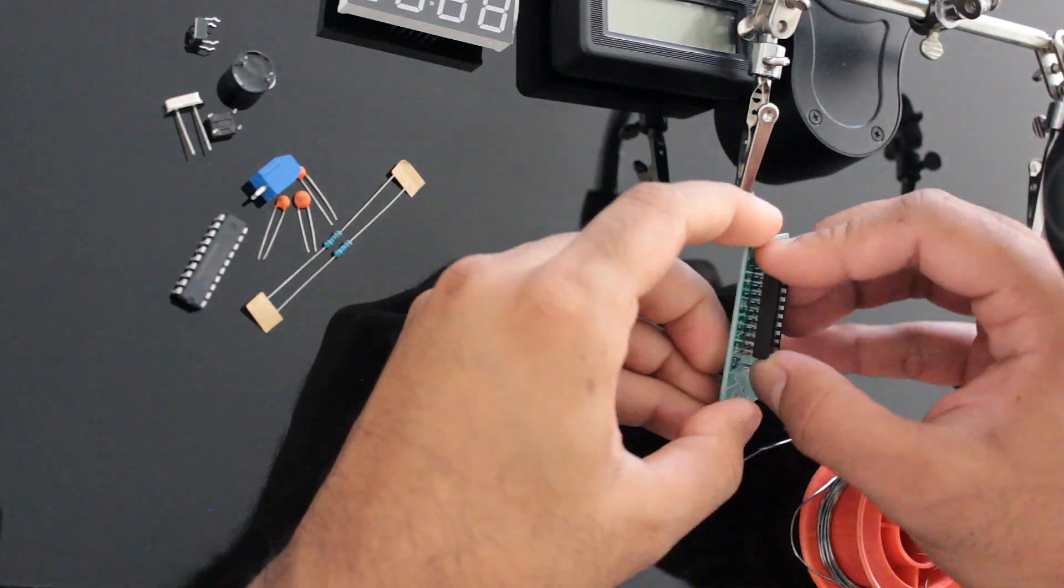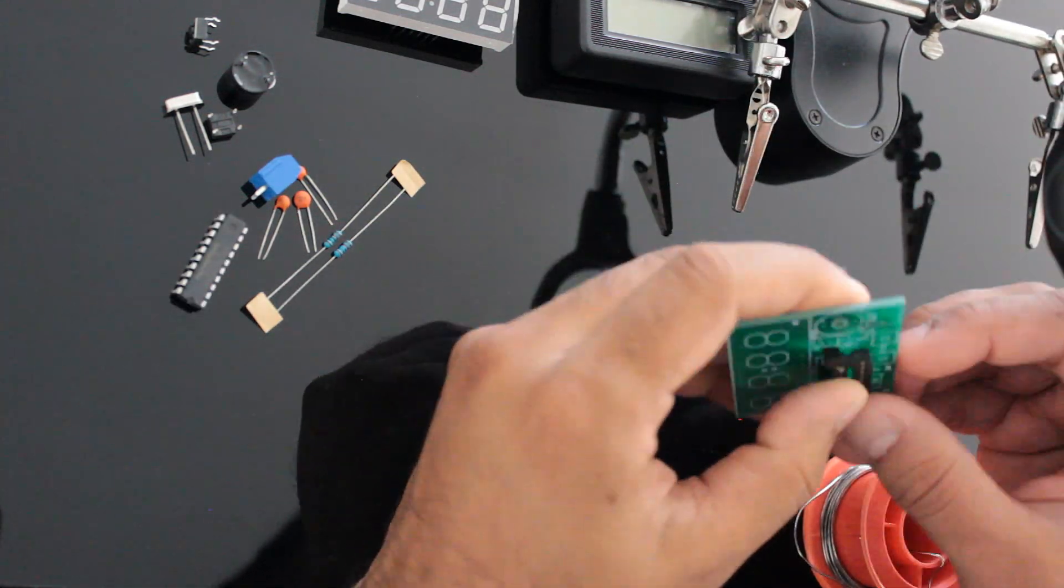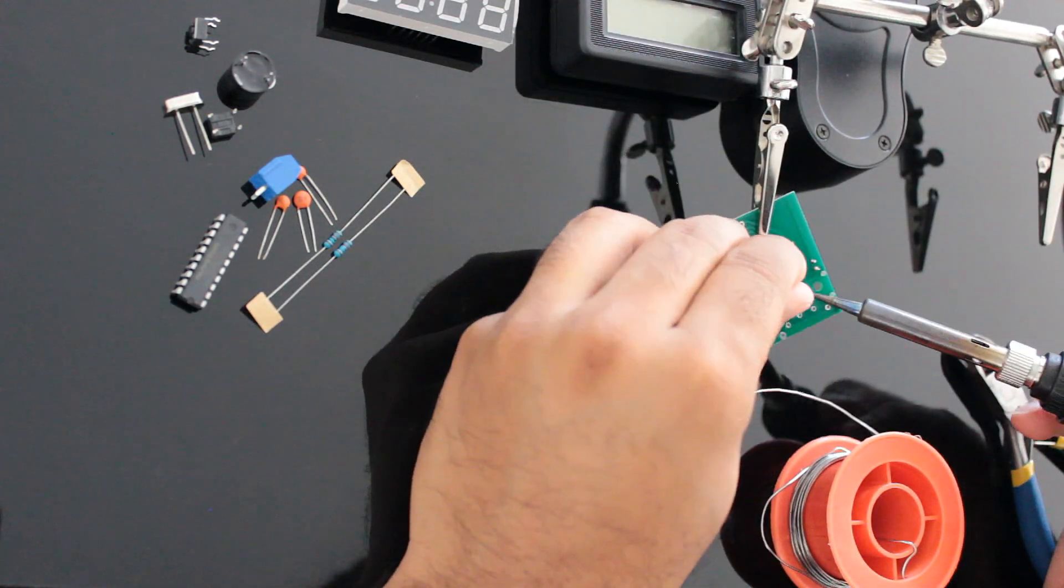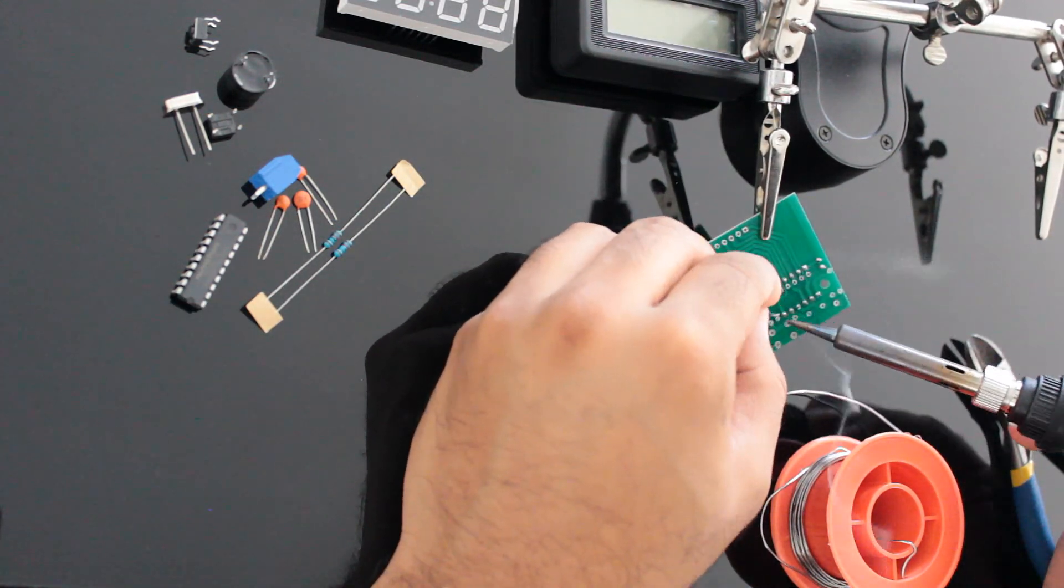It actually doesn't matter what order you're soldering the components on the board. The reason I'm soldering them from top to bottom is to have easy access to the components when I'm putting them on the board.